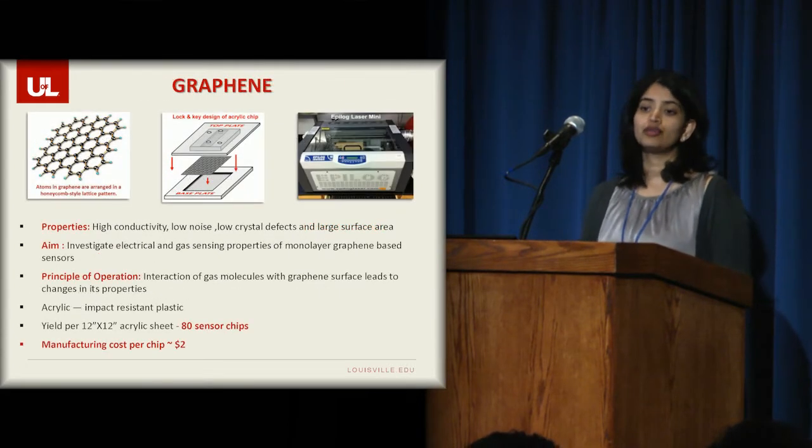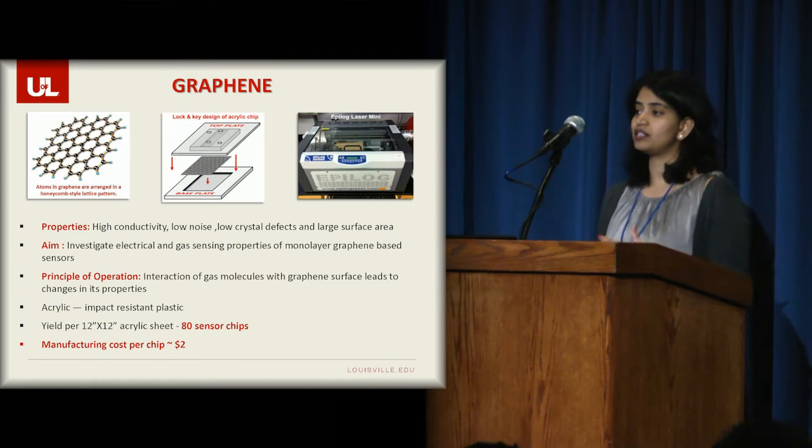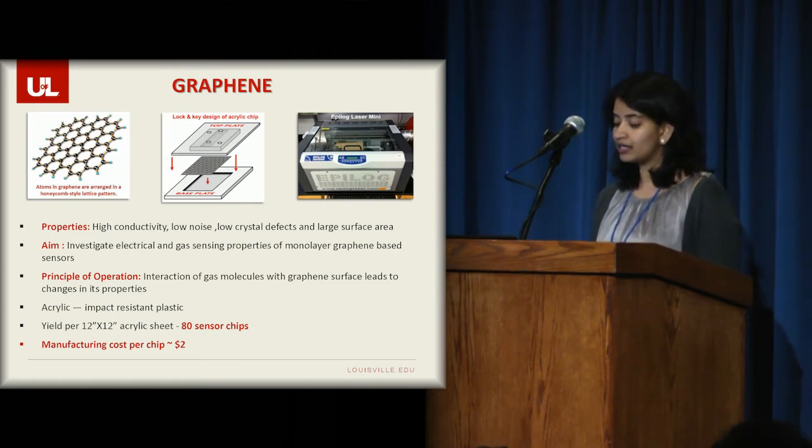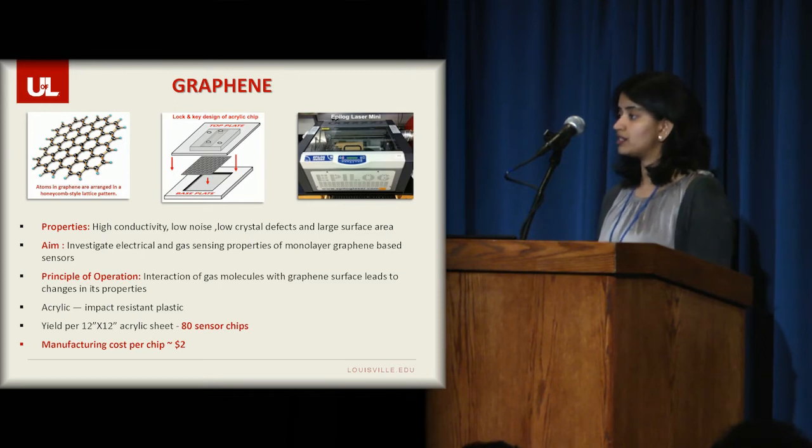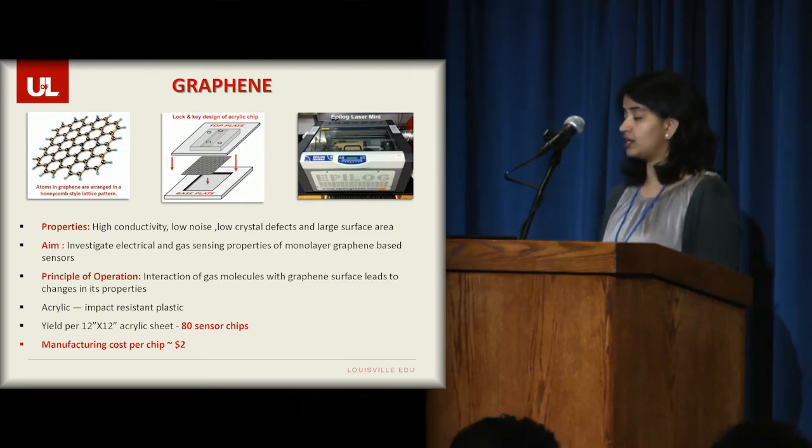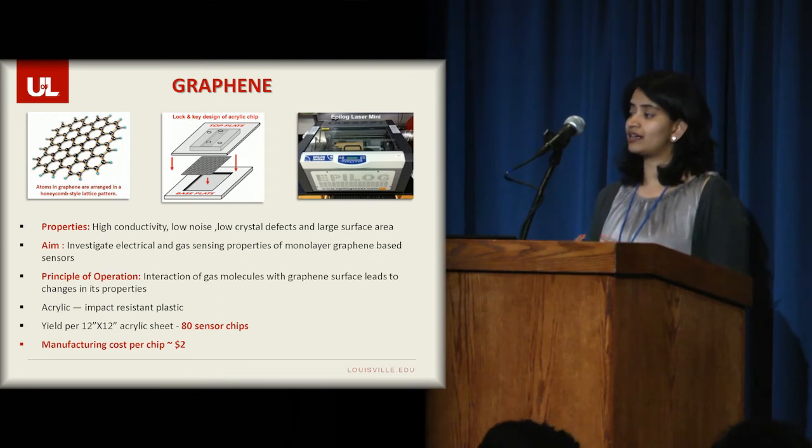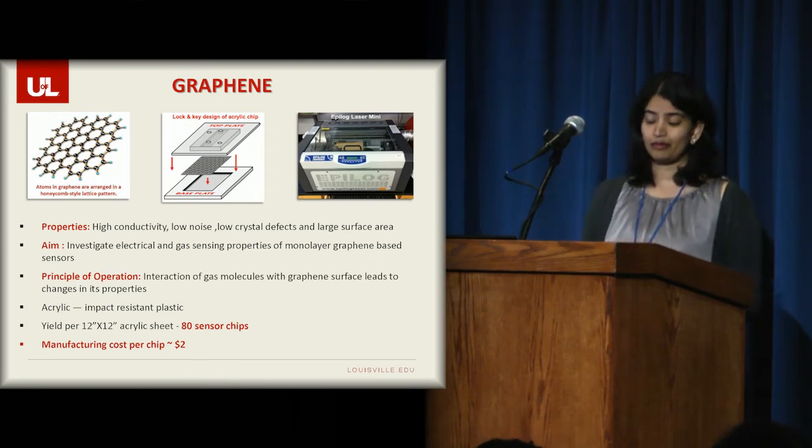Graphene is a two-dimensional nano-material, and it has amazing properties like high conductivity, low noise, low crystal defects, and a large surface area. So these properties make it very attractive for a sensing element.